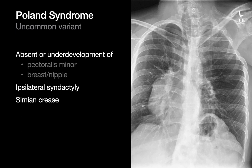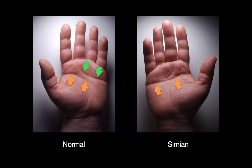In addition to upper rib issues, in people with Poland syndrome the pec minor, breast, or nipple may sometimes be absent or underdeveloped. There are two hand associations with Poland syndrome: syndactyly — fusion of the fingers — and a simian crease. In normal hands there are two horizontal creases in the palm; in folks with a simian crease there's only one.